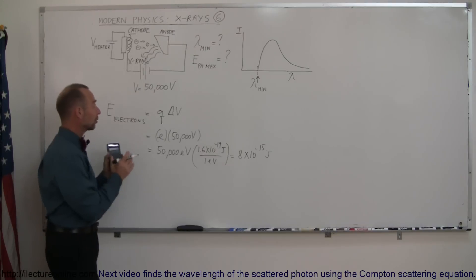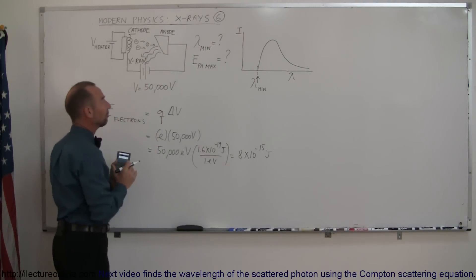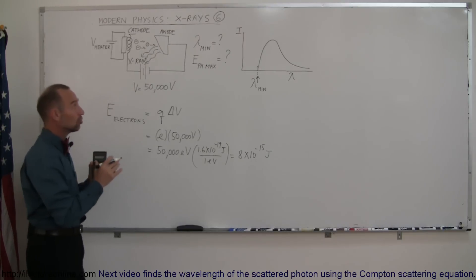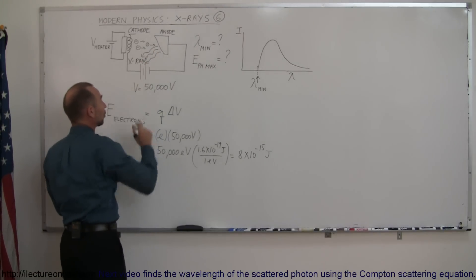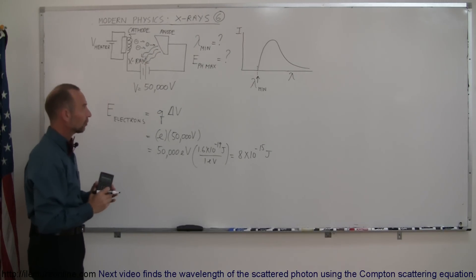Alright, so that is the maximum energy any one of those electrons can have. Assuming then that all of that energy is then given to the photons which then will shoot away from the anode in the form of X-rays.